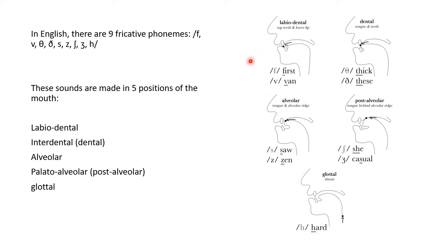Let's now practice these sounds in words. Say them after me please. /f/ as in 'first'. /v/ as in 'van'. /θ/ — 'thick'. /ð/ — 'these'. /s/ — 'saw'. /z/ — 'zen'. /ʃ/ — 'she'. /ʒ/ — 'casual'. And /h/ — 'hard'.